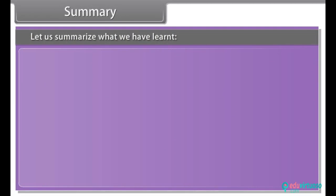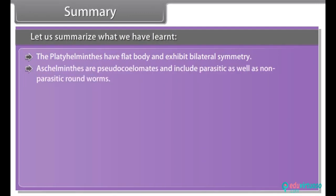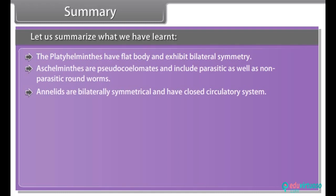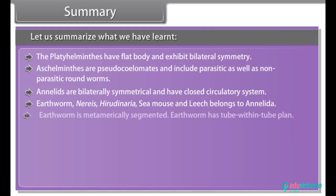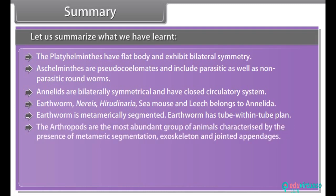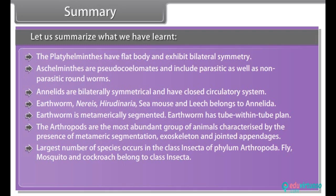Summary: The Platyhelminthes have flat body and exhibit bilateral symmetry. Aschelminthes are pseudocoelomates and include parasitic as well as non-parasitic roundworms. Annelids are bilaterally symmetrical and have a closed circulatory system. Earthworms, Nereis, Hirudinaria, sea mouse and leech belong to Annelida. Earthworm is metamerically segmented and has a tube-within-tube body plan. The arthropods are the most abundant group of animals characterized by metameric segmentation, exoskeleton and jointed appendages. The largest number of species occurs in the class Insecta of Phylum Arthropoda.